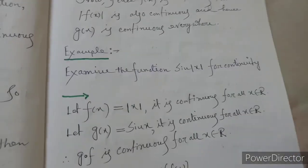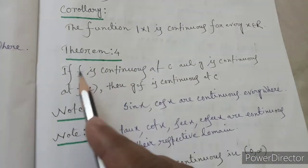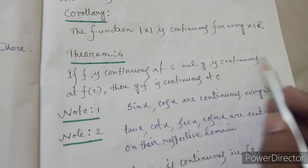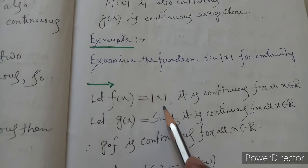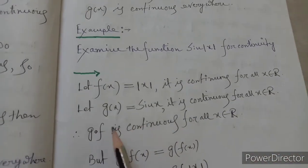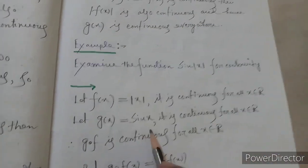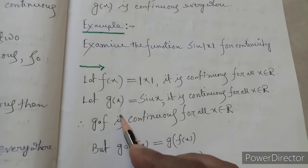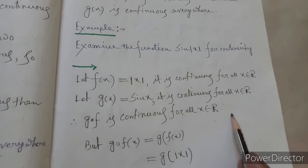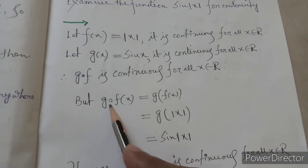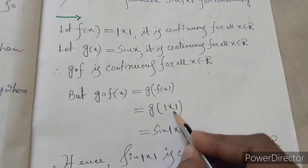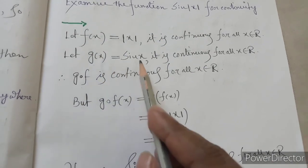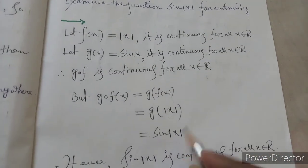Another example: examine the function sin(mod x) for continuity. We use Theorem four on composition of functions. Let f(x) equal mod x — which is continuous everywhere — and let g(x) equal sin x — which is a trigonometric function and continuous everywhere. Since both f and g are continuous, by Theorem four, g∘f is continuous. Now g∘f(x) equals g(f(x)) equals g(mod x) equals sin(mod x). Hence sin(mod x) is continuous.